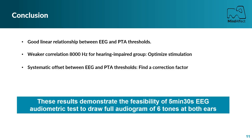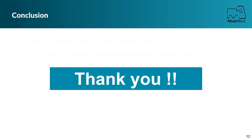To conclude, our study demonstrates the feasibility of a quick and robust EEG audiometric test capable of generating a full audiogram in just 5 minutes and 30 seconds for 250, 500, 1000, 2000, 4000, and 8000 Hz at both ears. Thank you very much for your attention, and if you have any questions, I'd be very happy to answer them.